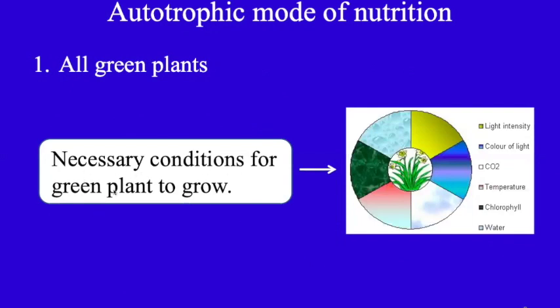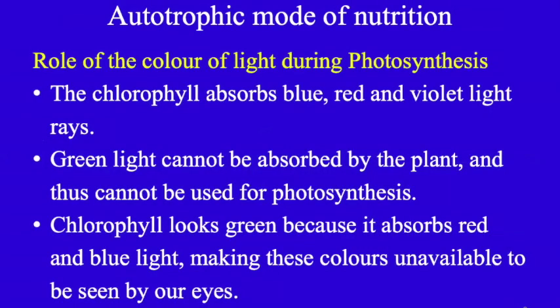The necessary conditions for green plants to grow include light intensity, color of light, carbon dioxide, temperature, chlorophyll, and water. Regarding the role of color of light during photosynthesis: chlorophyll absorbs blue, red, and violet light rays. Green light cannot be absorbed by the plant and thus cannot be used for photosynthesis. Chlorophyll looks green because it absorbs red and blue light, making these colors unavailable to be seen by our eyes.